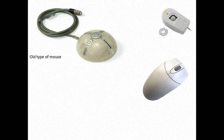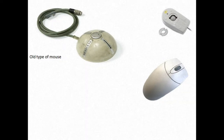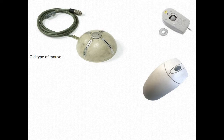Some mice have two buttons — right click and left click. If you turn the mouse over, you will see a ball at the bottom. When you drag the mouse on the table, the cursor moves on the screen. Three buttons are available in all types of mechanical mouse: right click, left click, and the center roller to scroll. In the two-button mechanical mouse, the roller ball is set inside at the bottom and senses the surface.